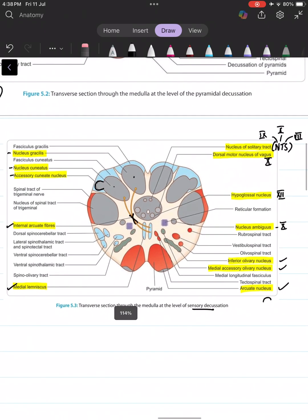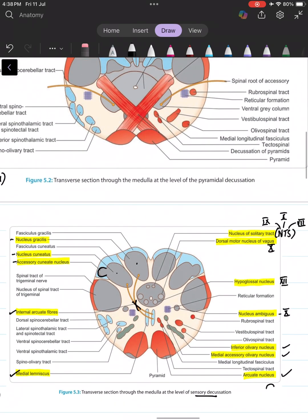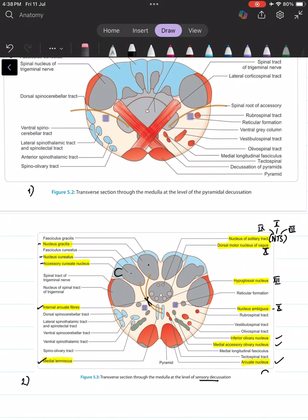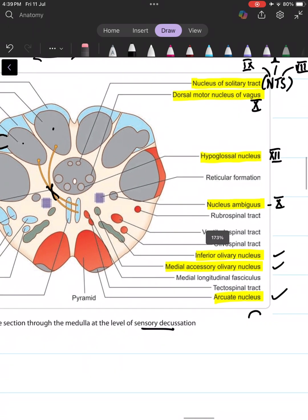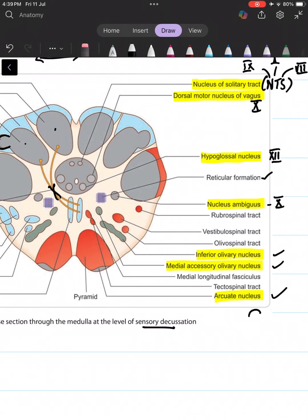These are pretty much the salient features of this section. Also note that this section is narrower compared to the previous section. Everything else is the same. Reticular formation you will see in almost every section.